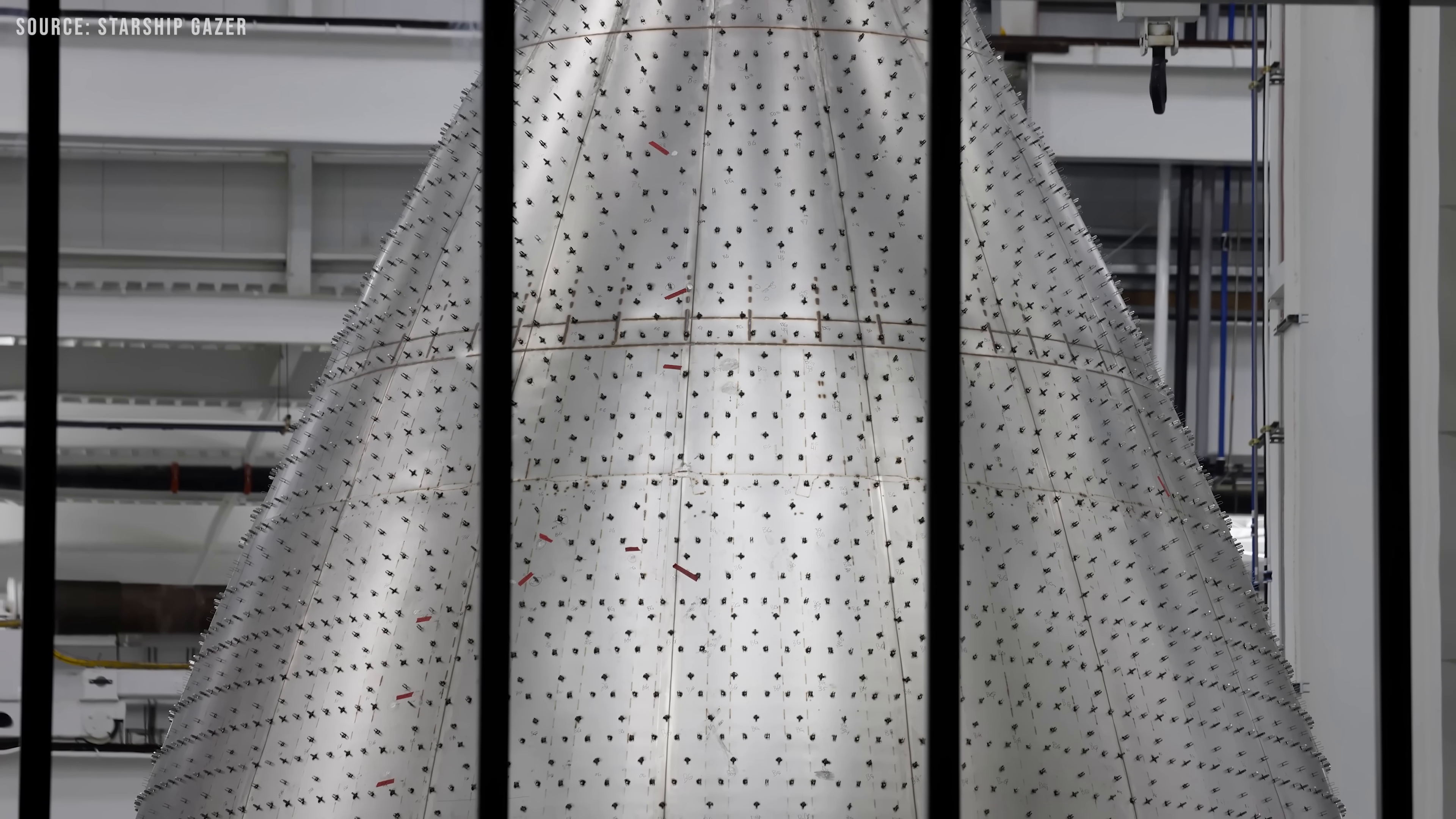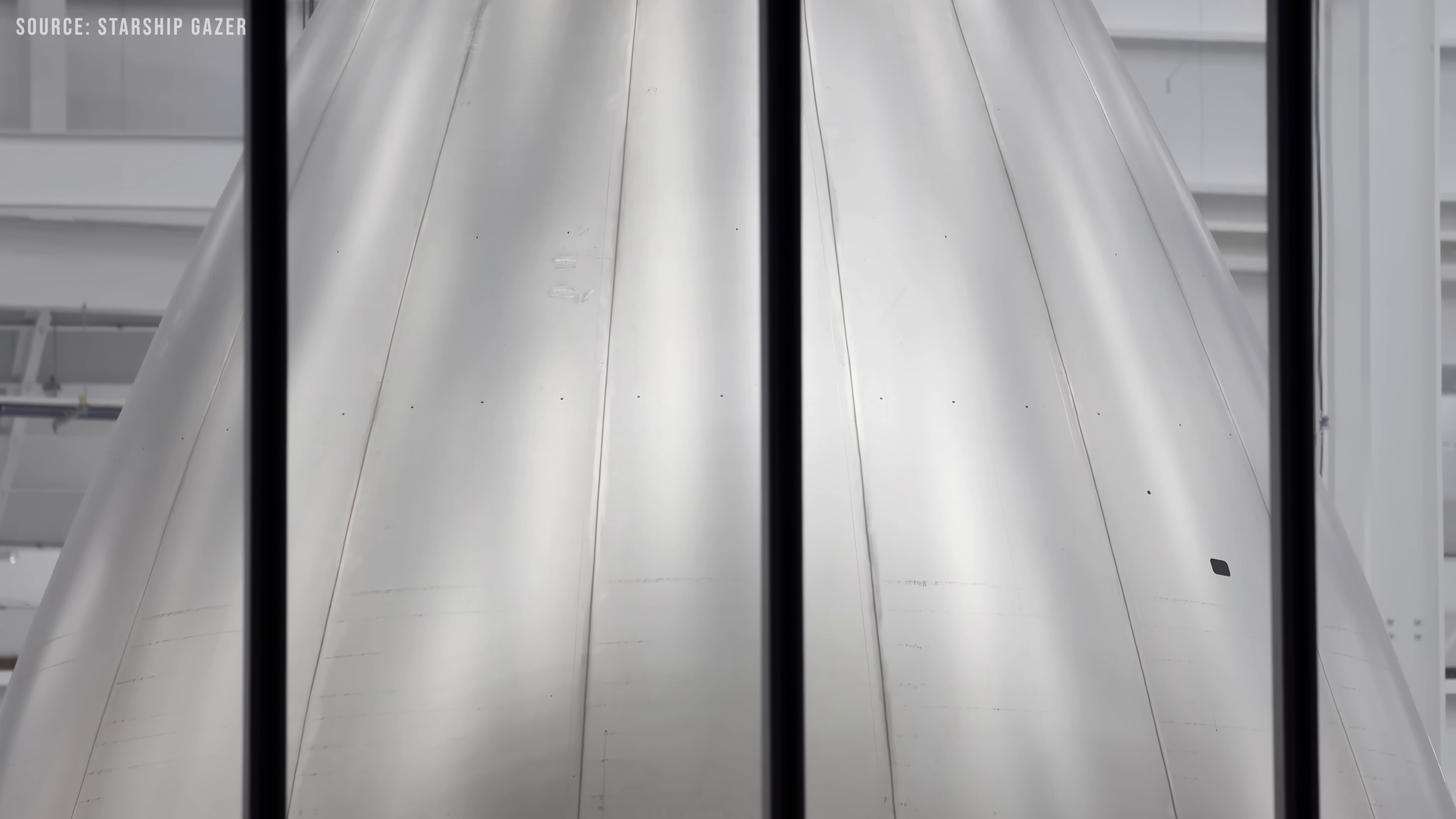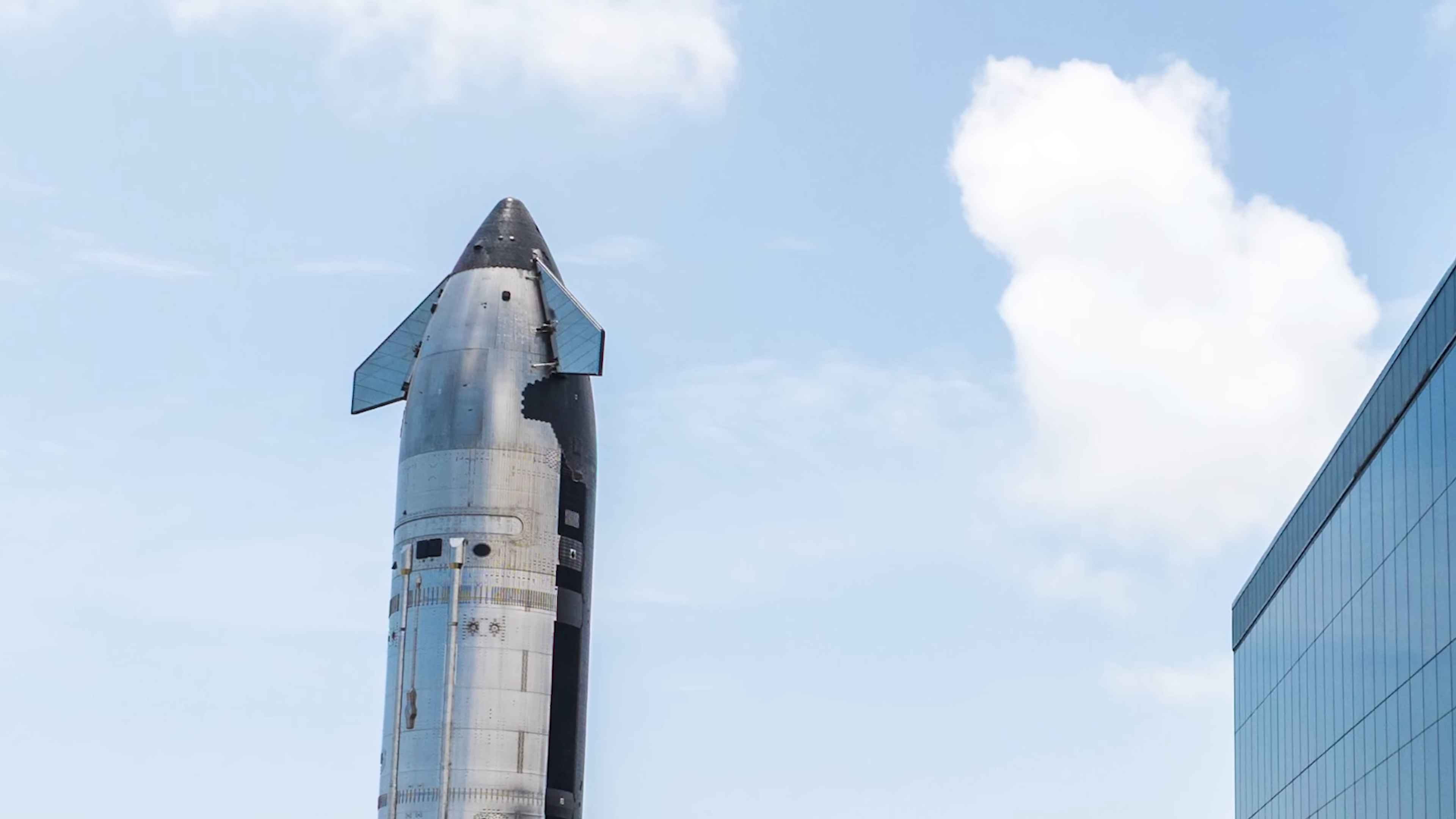Now, we're seeing a major shift. The new design uses large, vertically aligned steel plates. This change results in fewer welds and a much cleaner, more polished surface, reducing potential failure points. Gone are the rough seams, visible welds, and uneven finishes of earlier builds.